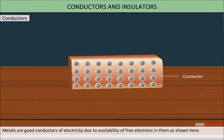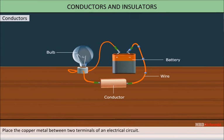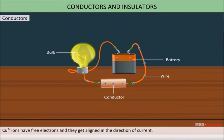Metals are good conductors of electricity due to available free electrons in it as shown here. Place the copper metal between two terminals of an electric circuit. Copper ions have free electrons and align in the direction of current. These electrons conduct the electricity and the bulb glows.